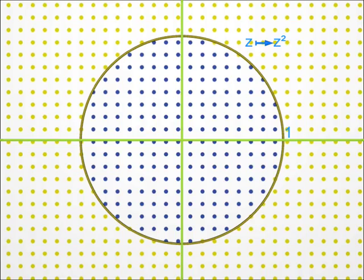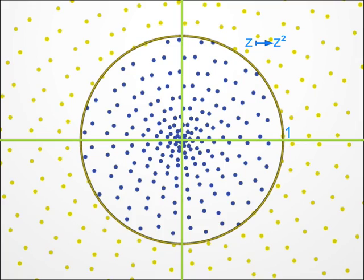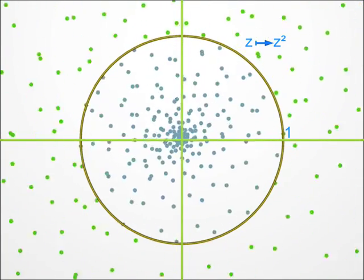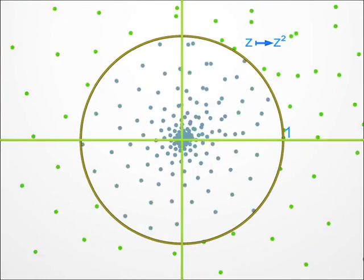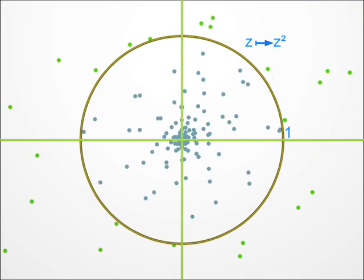Let's perform the transformation z-squared several times and look at the result. You can see that the blue points stay inside the disc, while the yellow points escape from the disc and even escape from the screen.